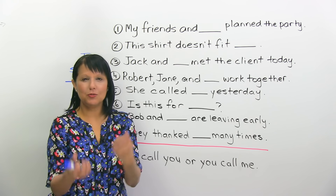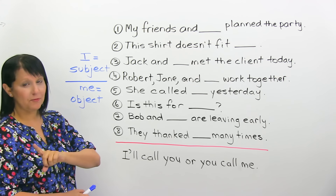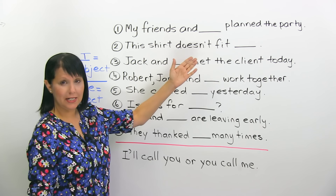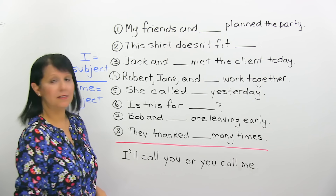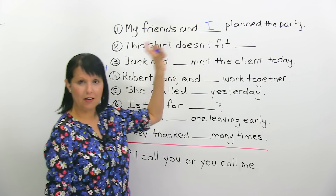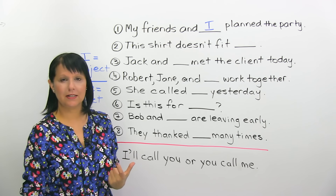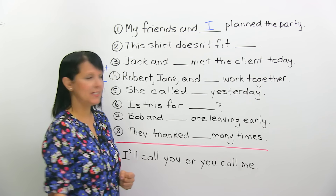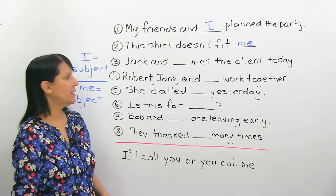Now let's start putting these words into real sentences. Your choices are I, which is for a subject, or me if it's an object. Here we go: 'My friends and blank plan the party' — should it be I or me? My friends and I, because it's the subject of the sentence. Next: 'This shirt doesn't fit blank' — I or me? This shirt doesn't fit me — again receiving the action.